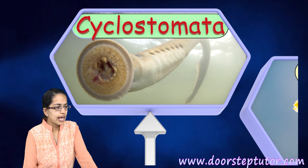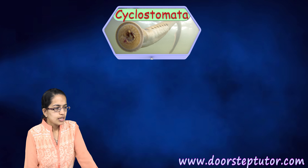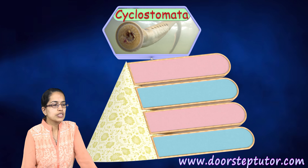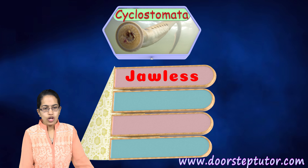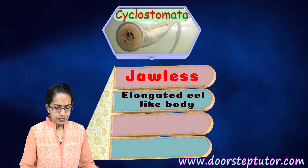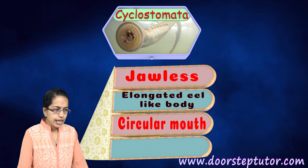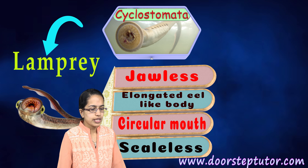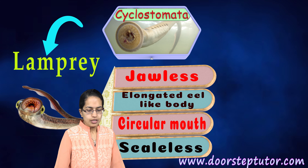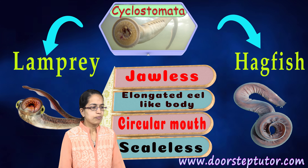The first category is Cyclostomata. Cyclostomata are those which are jawless — elongated eel-like organisms. They have a circular mouth. Scales are absent, so they are scaleless. Lamprey is a good example, and hagfish is another example of Cyclostomata.